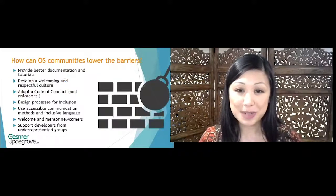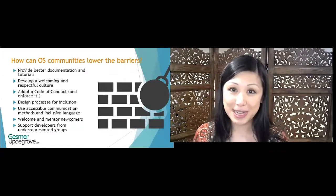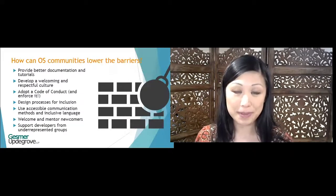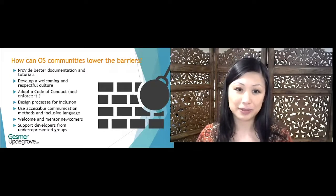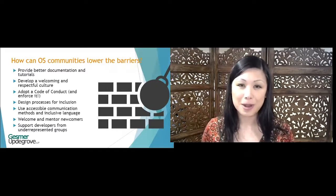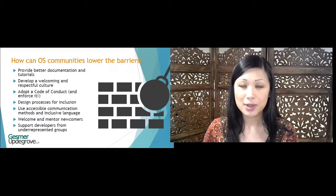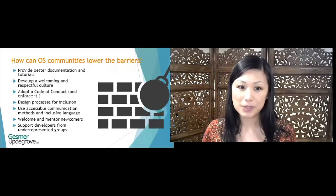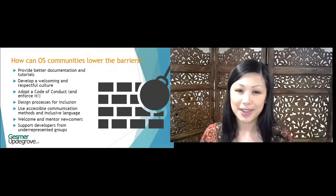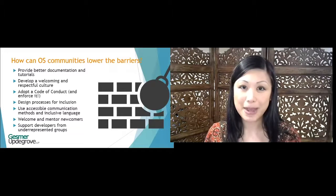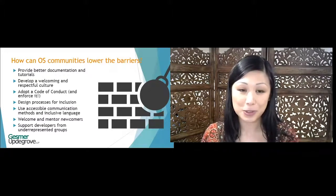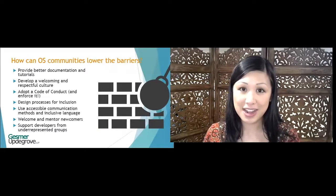How can open source communities lower the barriers? We're going to do a deep dive into each of these practices, but here's a list: provide better documentation and tutorials, develop a welcoming and respectful culture, adopt a code of conduct, design your processes for inclusion, use accessible communication methods and inclusive language, welcome and mentor newcomers, and support developers from underrepresented groups. You may notice that most of these inclusive practices are best practices for any healthy, thriving open source community and aren't targeted just at underrepresented or historically disadvantaged groups.